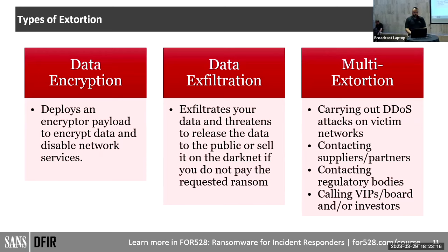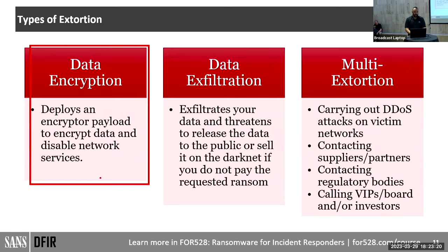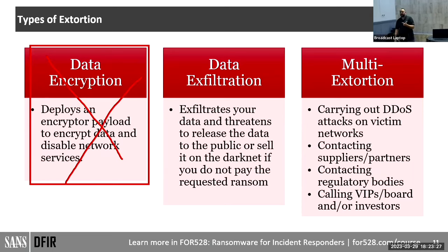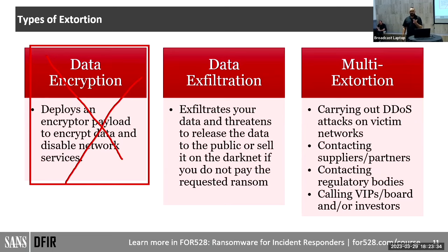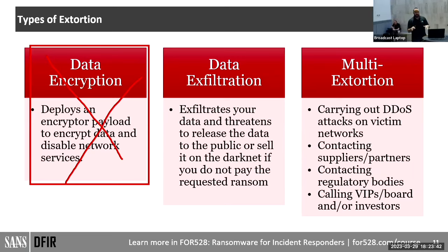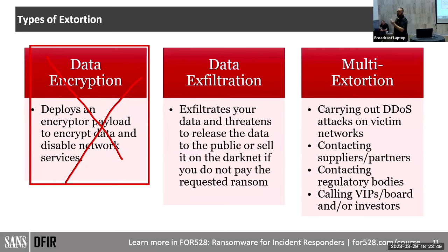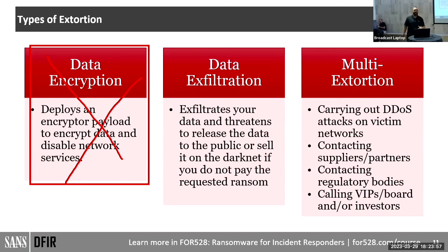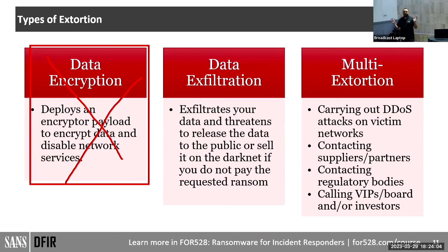We're seeing some groups saying: 'we're just not going to do the encryption part anymore.' Groups like Ransom House, Karakurt — which sprung off from the Conti group — Cl0p, and BianLian. There's an article by the Redacted team called 'The Evolution of BianLian.' They found a flaw in BianLian's encryption methodology — they rolled their own crypto — someone found the flaw and released a decryptor. Their response was to just stop using encryption. They're now pure data extortionists.